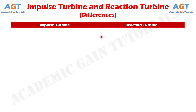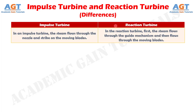Here we will discuss various differences among them in detail. Difference number 1: In an impulse turbine, the steam flows through the nozzle and strikes on the moving blades. Whereas, in a reaction turbine, the steam first flows through the guide mechanism and then flows through the moving blades.